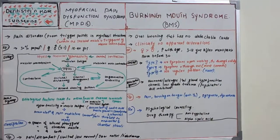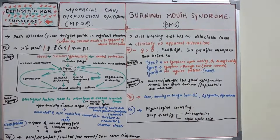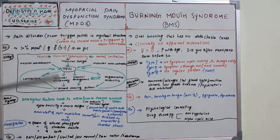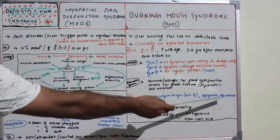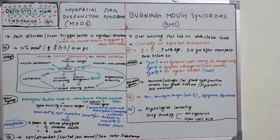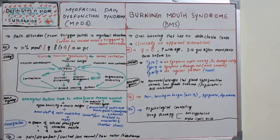The most common clinical feature of BMS is burning sensation, especially in the anterior part of the tongue. Other features include dysgeusia (altered taste) and dysesthesia (itching or pain sensation), particularly on the anterior one-third of the tongue.